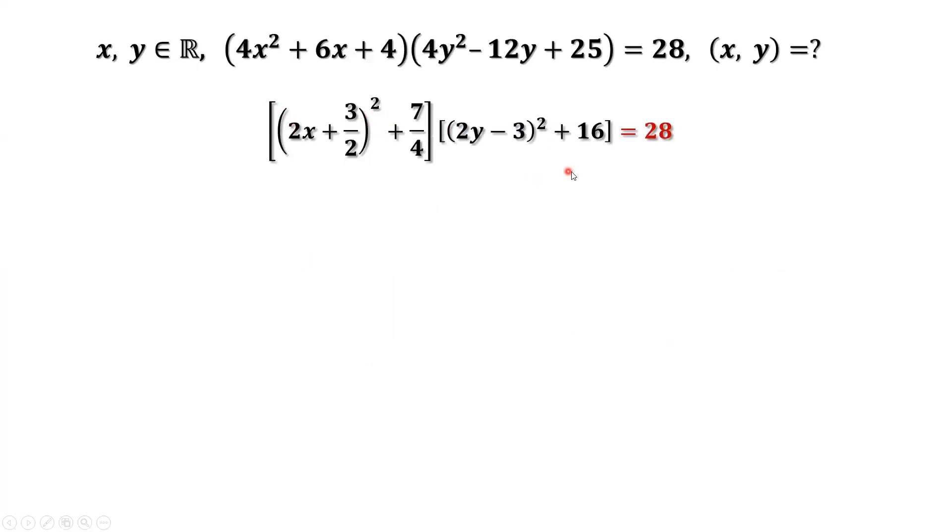The equal sign holds if and only if 2x plus 3 over 2 squared equals 0, and 2y minus 3 squared equals 0. So, solve this equation and this equation. We have x equals negative 3 over 4 and y equals 3 over 2.